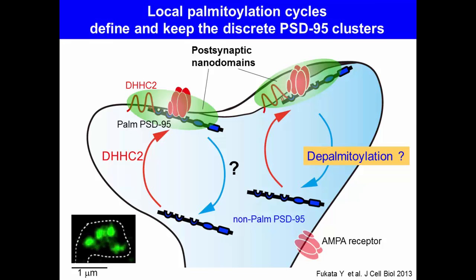Here, we propose that local continuous palmitoylation cycles composed of synaptic DHHC2 palmitoylating enzyme and a still-unknown PSD95 de-palmitoylating enzyme prevent the lateral diffusion of membrane-bound PSD95, and thereby may define and maintain the discrete PSD95 nanoclusters in the spine membrane.